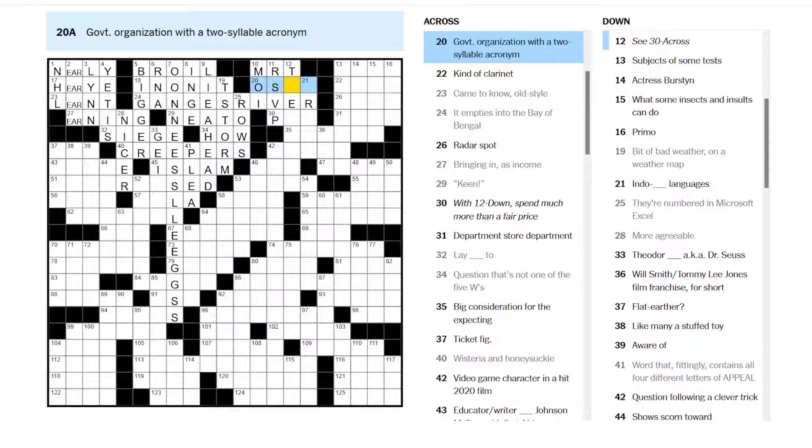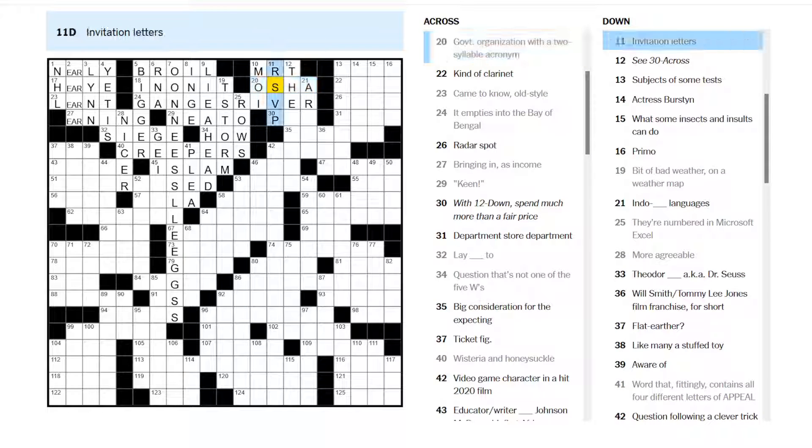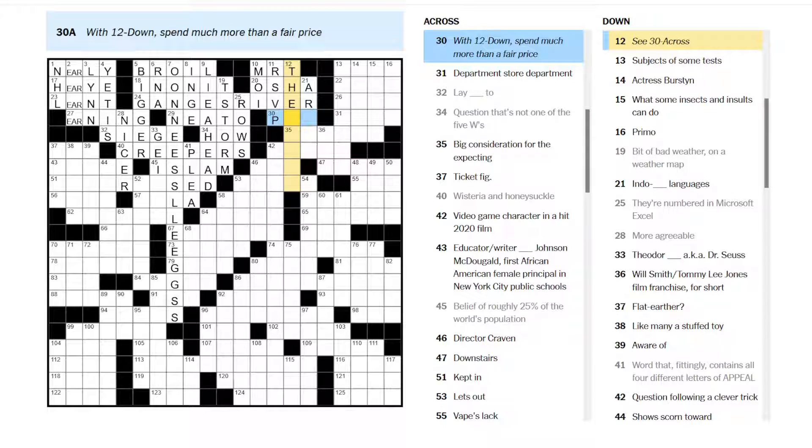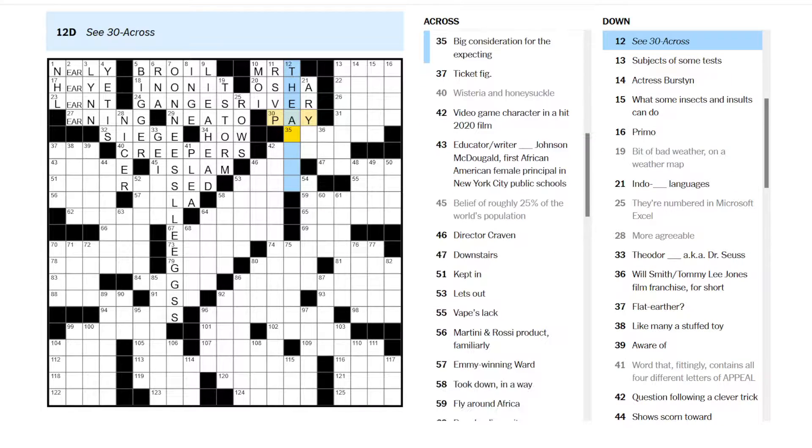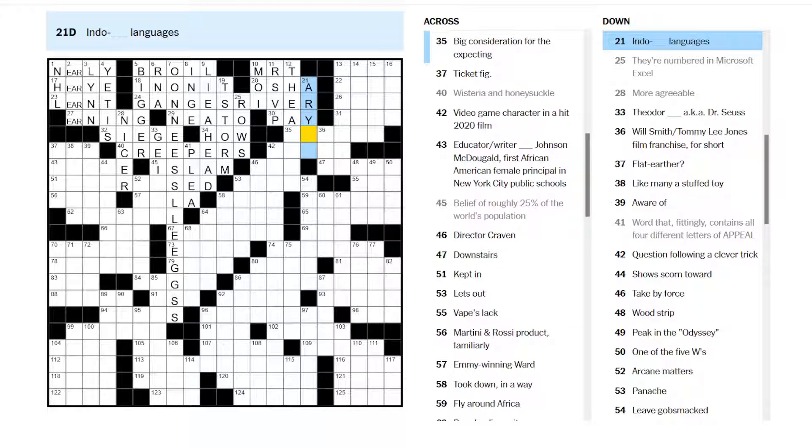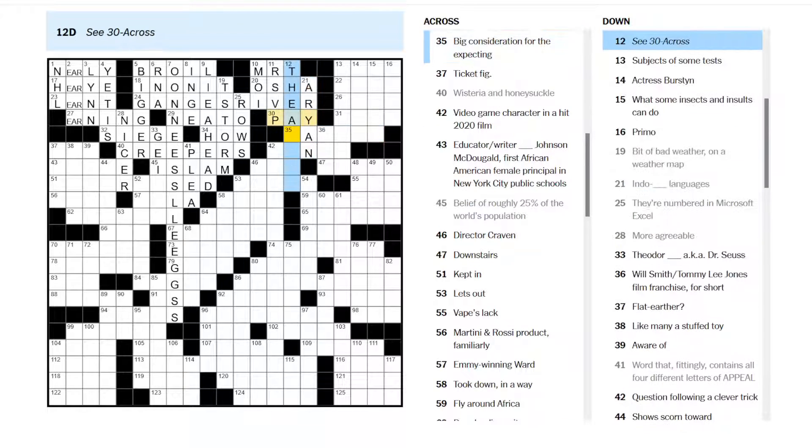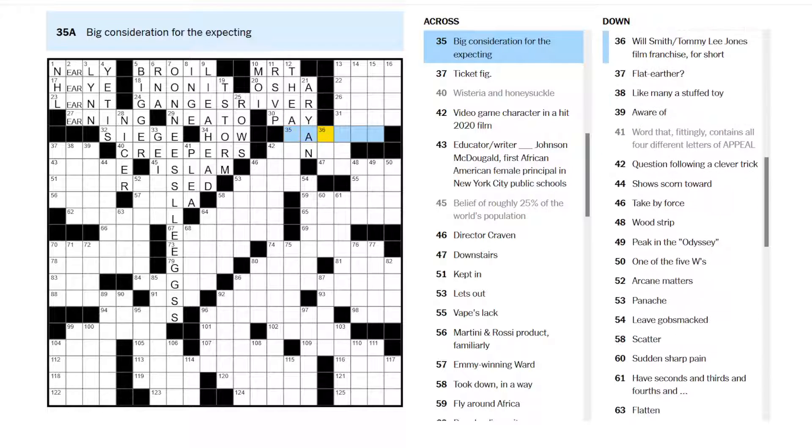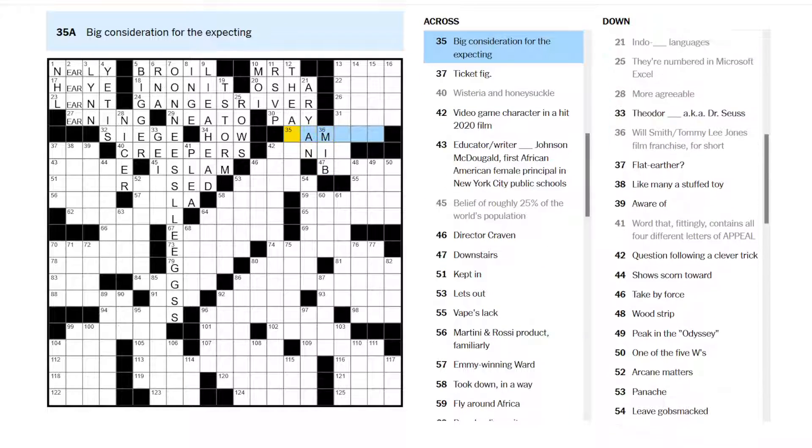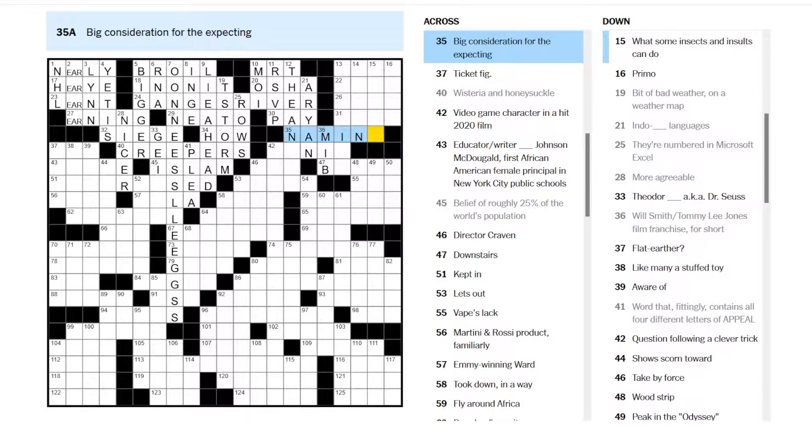Invitation letters or RSVP. Government organization with a two-syllable acronym. OSHA. Occupational Safety and Health Administration. With 12 down, spend much more than a fair price. Pay the. Indo-Aryan languages? Spend much more than a fair price. Not sure. Big consideration for the expecting. Name? Will Smith, Tommy Lee Jones, film franchise. That's Men in Black, MIB.